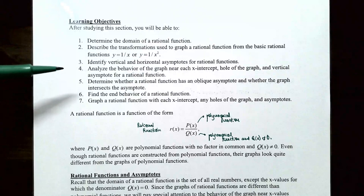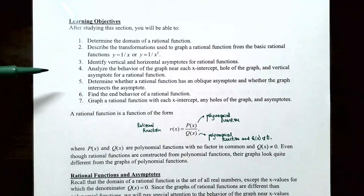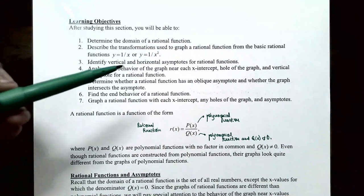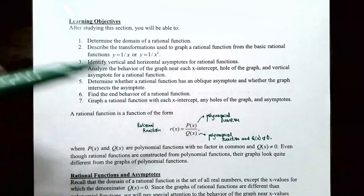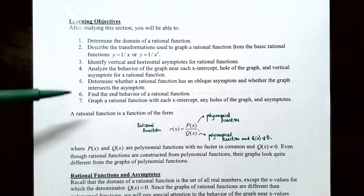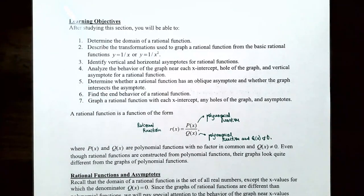In this video we're going to talk about how to analyze the behavior of a graph near the x-intercept, hole in the graph, or vertical asymptote for a rational function, determine whether a rational function has an oblique asymptote and whether the graph will intersect that asymptote, and how to graph a rational function with each x-intercept, any holes, and horizontal and vertical asymptotes.